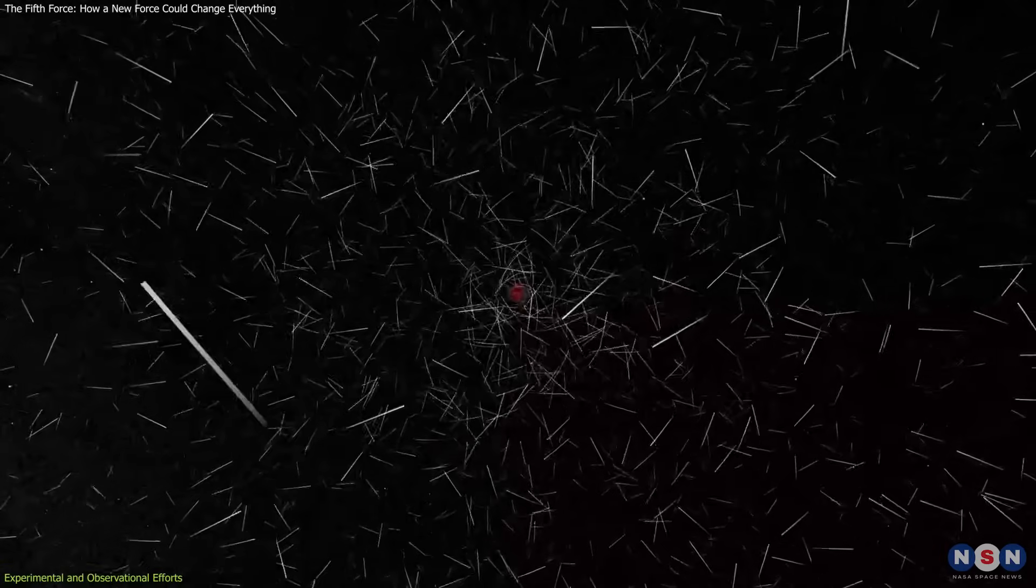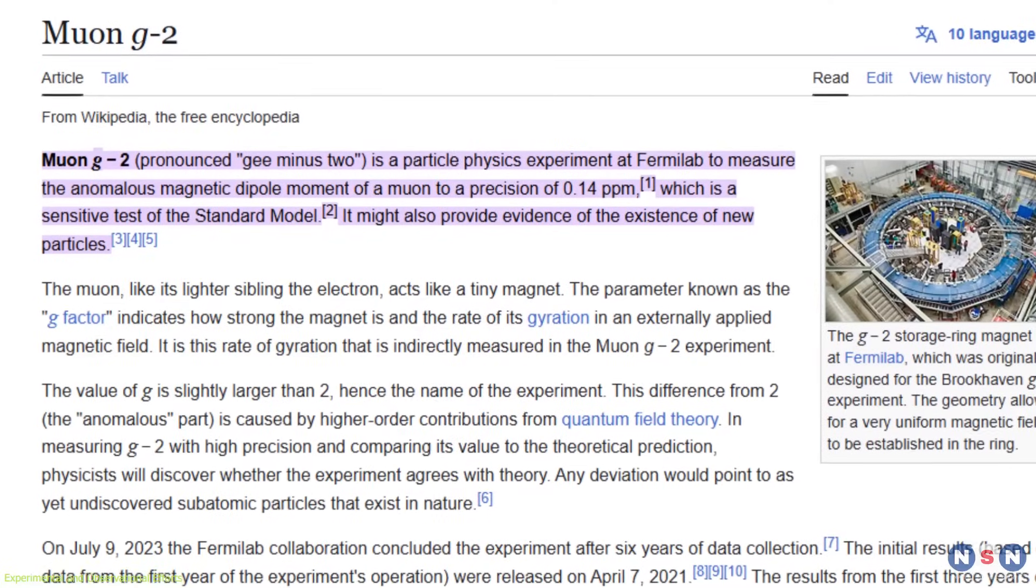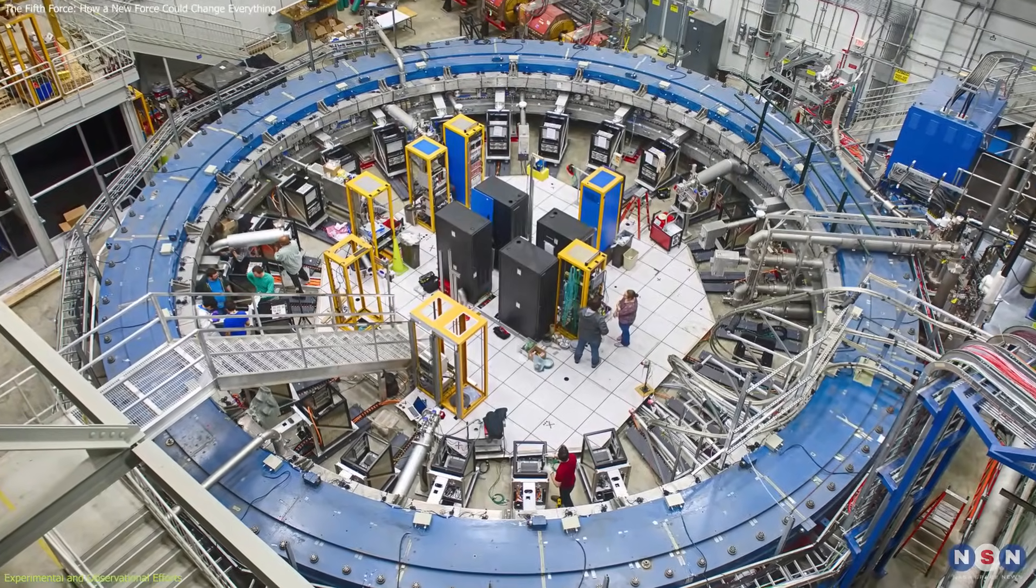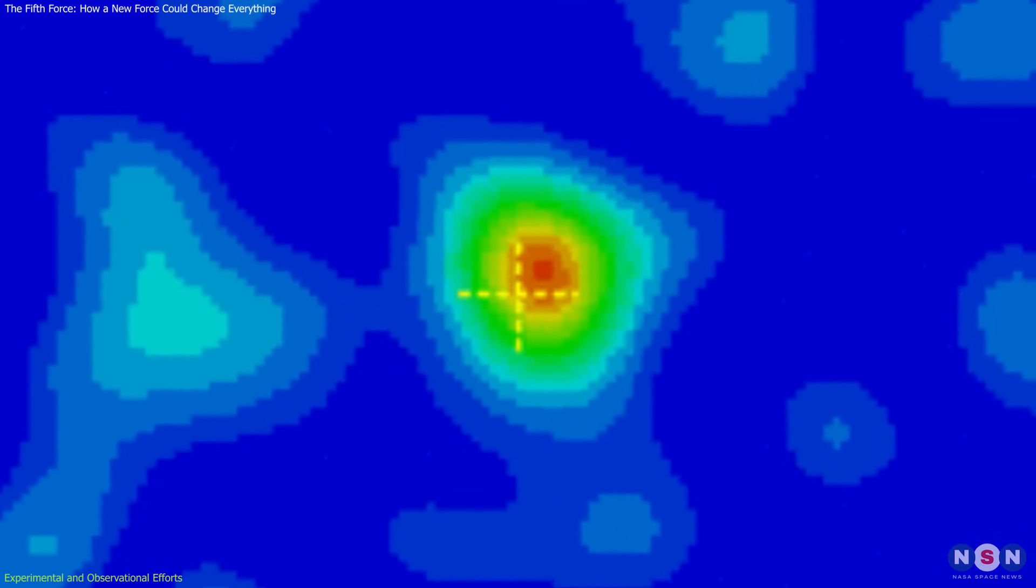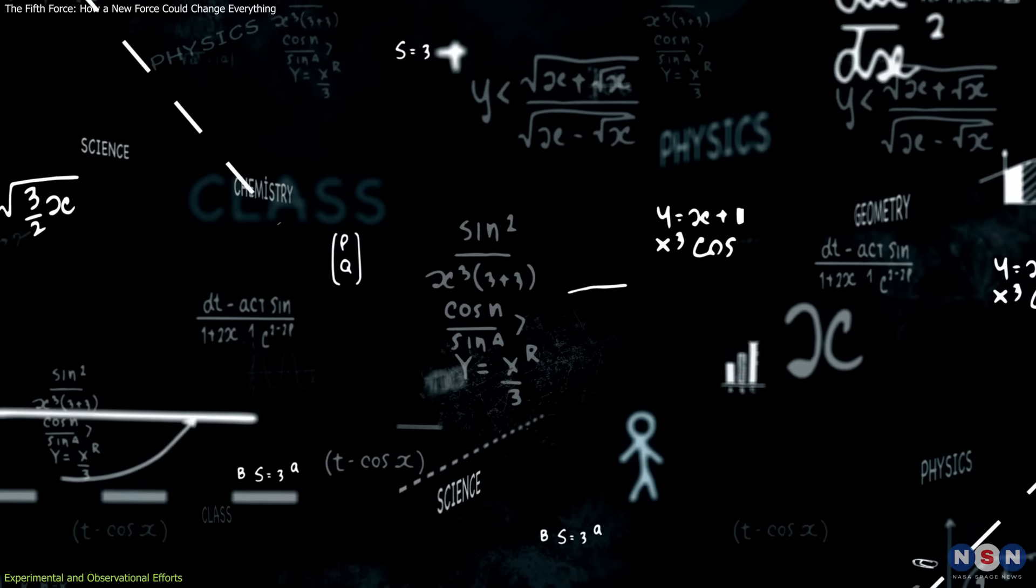The pursuit of a fifth force has driven innovative experiments and detailed observations. One notable experiment is the muon G-2 at Fermilab, which investigates the magnetic moment of the muon. Recent findings indicate that muons exhibit behavior deviating from standard model predictions, hinting at new physics.